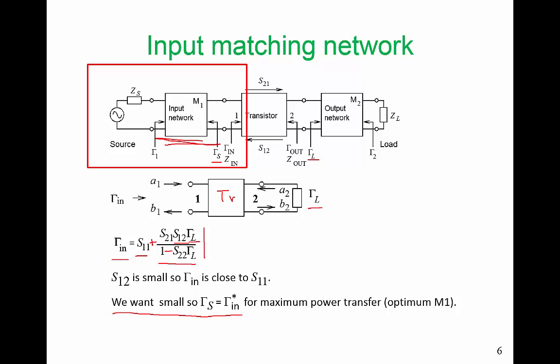We can call that the optimum M1 if we solely look at gain. Now, if we take noise into consideration, we may have to change this a little bit, so our optimum would look a little bit different. But as far as gain is concerned, picking gamma-S equal to gamma-In conjugate will give us maximum power transfer.